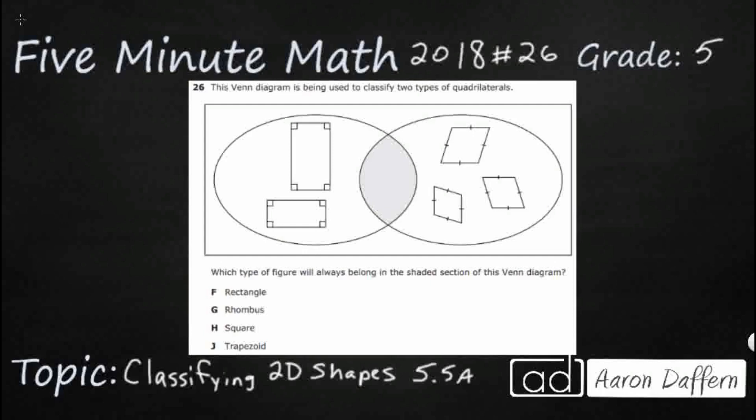So we have a Venn diagram. We have a little overlapping part right here that we are looking at, that is the shaded area that belongs to both circles. They don't name any of these shapes, but we can go ahead and do that. You notice the shape that we are looking for needs to belong to both circles, needs to be in that shaded section, or both ovals actually.